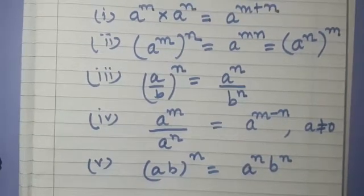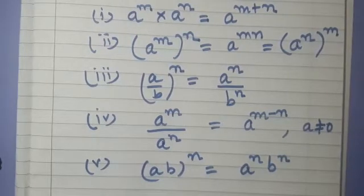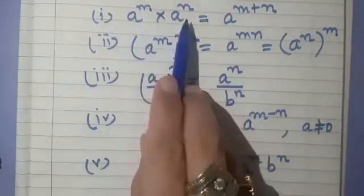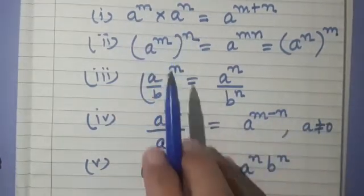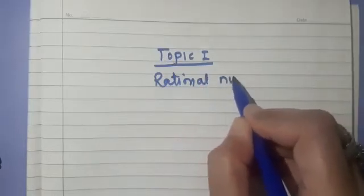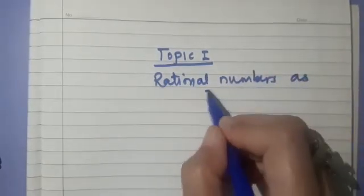You have already done these laws in class 7. Now in class 8 we will be studying about rational numbers as exponents. Here m and n were integral exponents — integers. Now we are talking about rational numbers as exponents. So topic 1 for class 8 is: rational numbers as exponents.